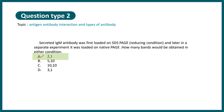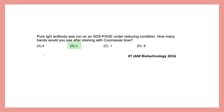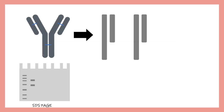IIT JAM 2016 asked a similar question: pure IgG antibody was run on SDS-PAGE under reducing conditions — how many bands would be obtained after Coomassie blue staining? Two bands would be obtained, one corresponding to the heavy chain and one to the light chain. When you reduce the antibody with a reducing agent, the disulfide bonds break, producing two heavy chains and two light chains, giving one band corresponding to each type.